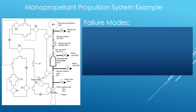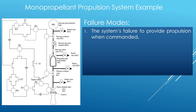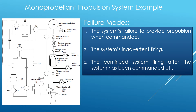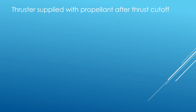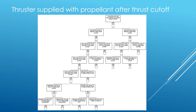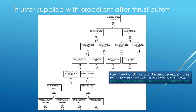In this example there are three general system failure modes that can be assessed: 1. The system's failure to provide propulsion when commanded. 2. The system's inadvertent firing. And 3. The continued system firing after the system has been commanded to shut off. In this example we'll discuss the fault tree for failure mode 3. This is the fault tree that we will construct and evaluate in Top Event FTA. For a detailed explanation of the fault tree please review the fault tree handbook with aerospace applications.